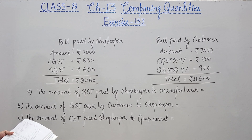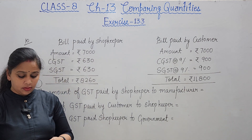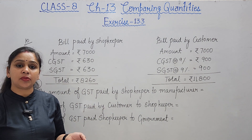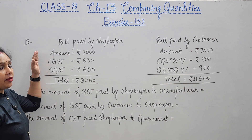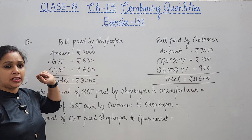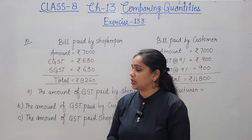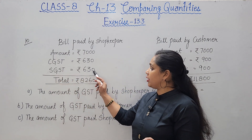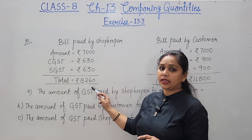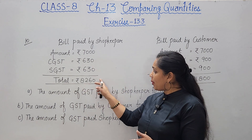Question number 10: the bill for a mattress — purchased by a shopkeeper from a manufacturer and sold by the shopkeeper to a customer. The shopkeeper purchased from the manufacturer at rupees 7000, with CGST rupees 630 and SGST rupees 630, making total rupees 8260 paid to the manufacturer.